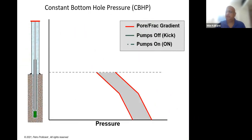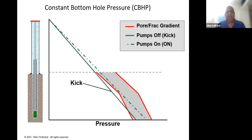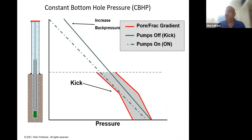What is constant bottom hole pressure? When your pumps are on, you have a certain pressure in the well. If you go underbalanced when pumps are off — you lose friction pressure and might get a kick. When you apply surface back pressure, you essentially increase wellbore pressure and thus prevent that kick from happening. This is precisely the concept of constant bottom hole pressure, or applied surface back pressure.